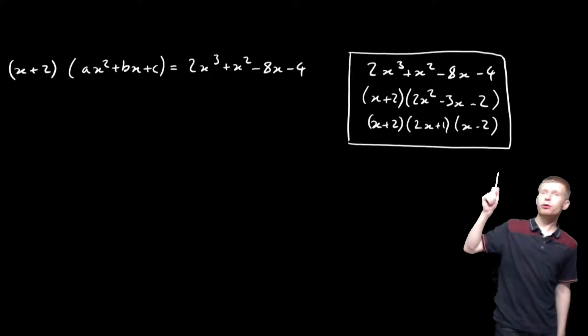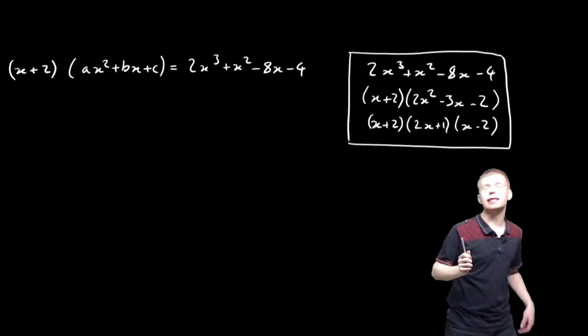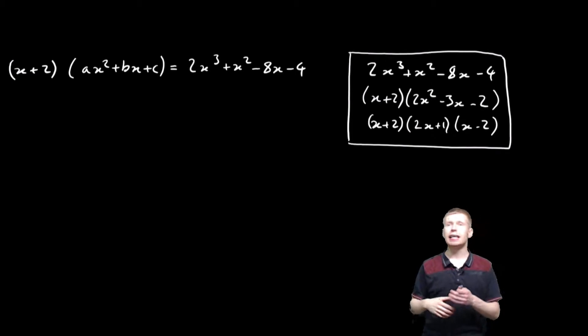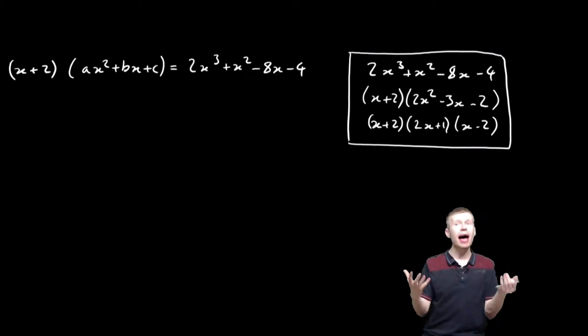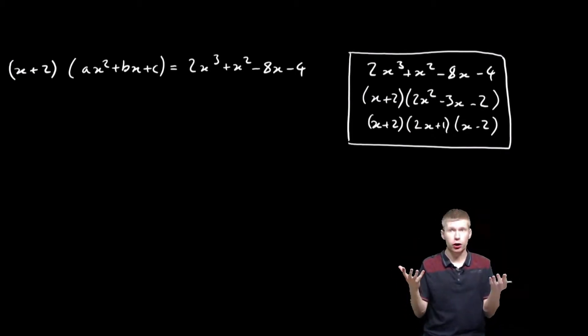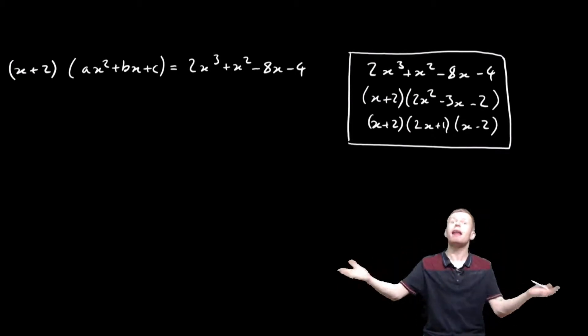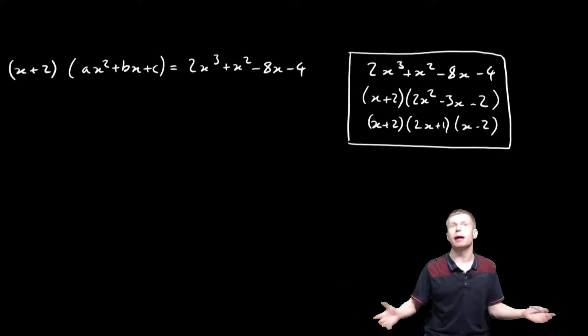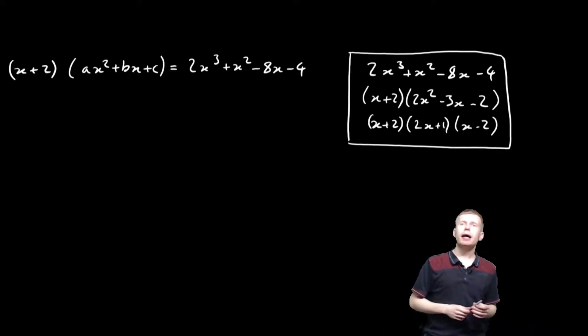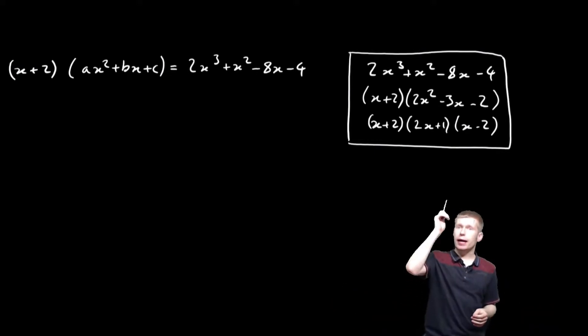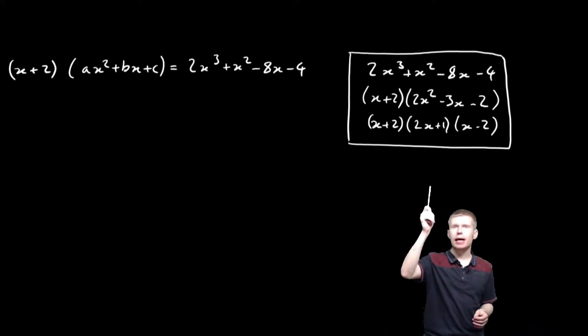In the last video we talked about how to do this thing. We basically said if we knew what a factor was of our cubic, then we knew the other thing must be a quadratic, and that meant we could work with it. Using that method is absolutely great.